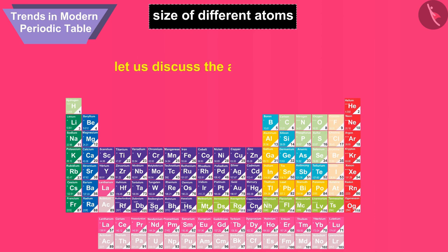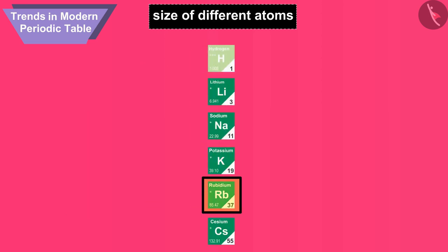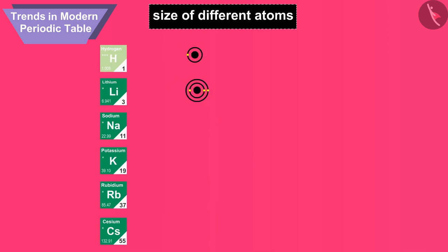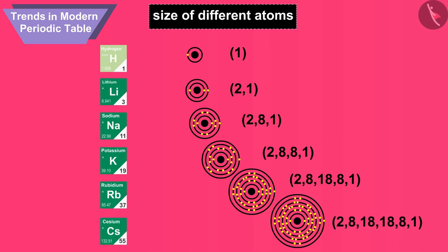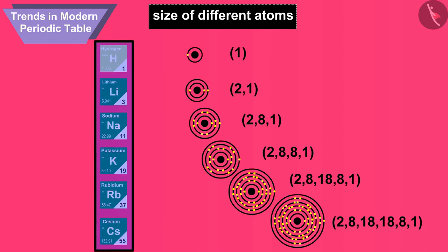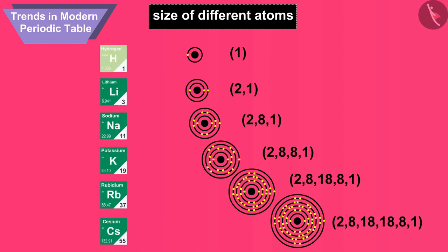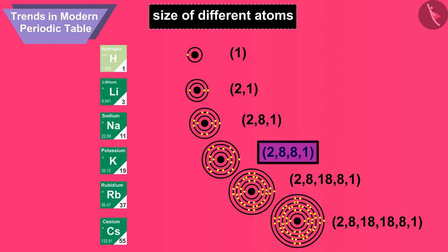Now let us discuss the atomic size of the elements in the groups. As you see, going down the group, the size of the atoms increases. The smallest atomic size will be found at the top of a group whereas the largest atomic size is found in the lowest part of the group. When we move from top to bottom in a group of the periodic table, a new shell of electrons is added to the atoms at every step. The number of electron shells increases gradually, due to which the size of atom also increases.